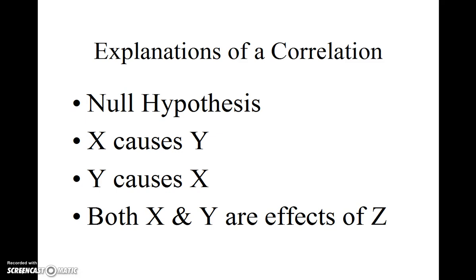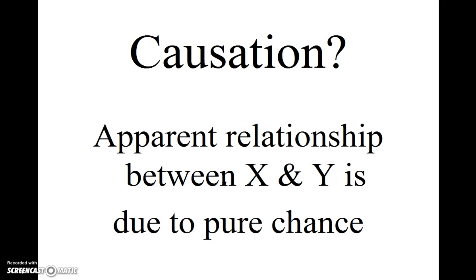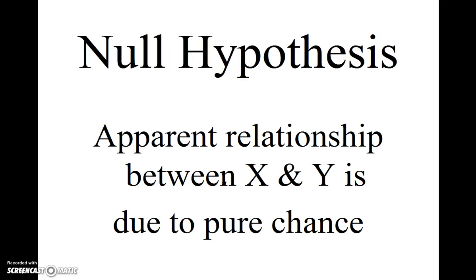Whenever we have a correlation between variables, there are four different possible explanations for that correlation. We always start with the first explanation — the so-called null hypothesis. It's possible that x could be the cause of y, but it's also possible that y could be the cause of x. And then, it's possible that both x and y are the mere collateral effects of some other confounding variable z. The first possible explanation is that the apparent relationship between x and y is merely due to pure chance — luck. We have a special name for that possibility. We call it the null hypothesis.